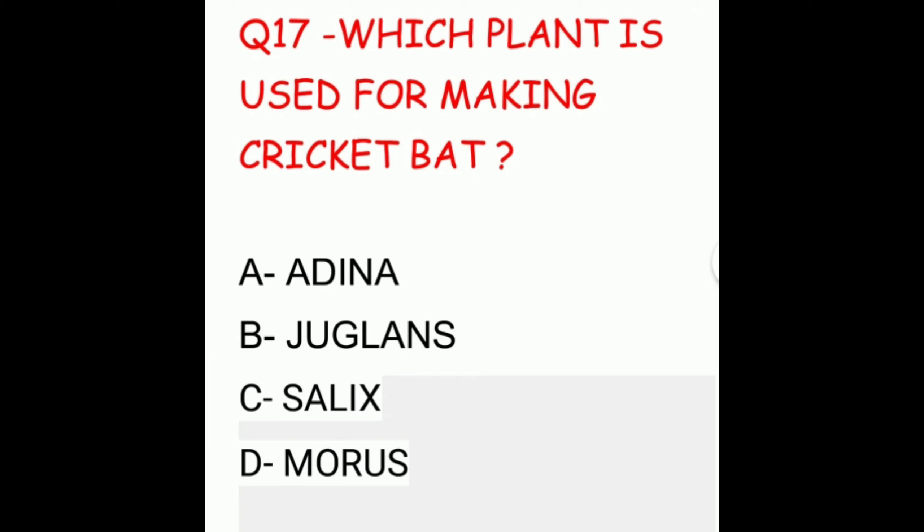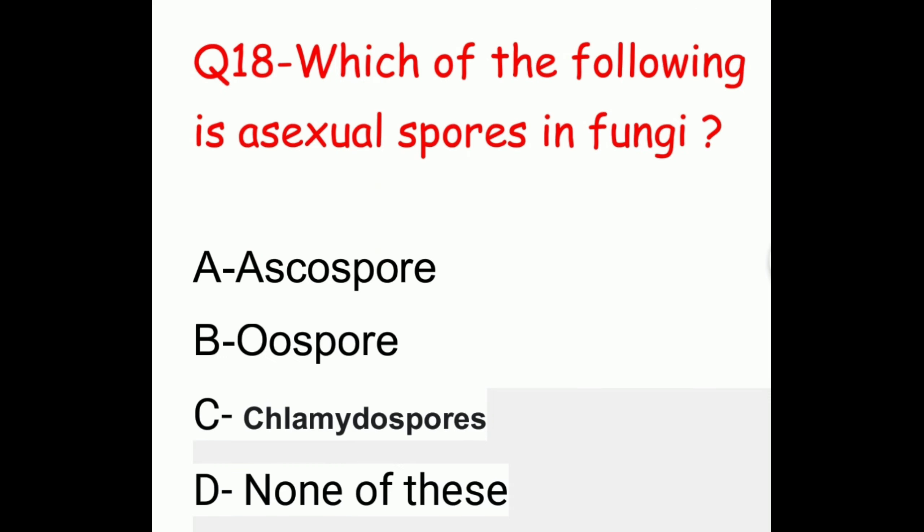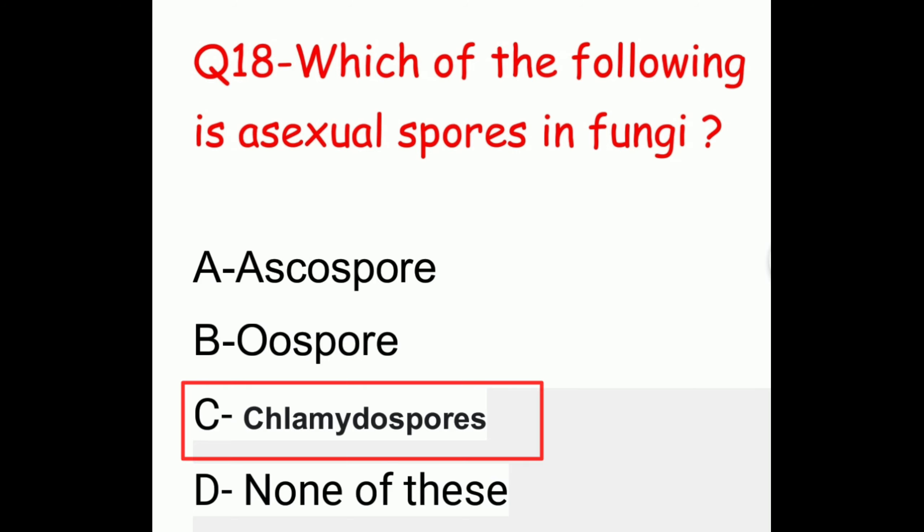Question 18. Which of the following is an asexual spore in fungi? The options are ascospore, oospore, chlamydospores, or none of these. The correct answer is chlamydospores.